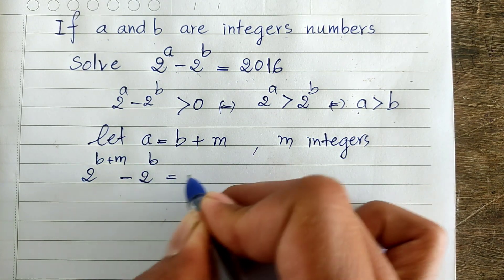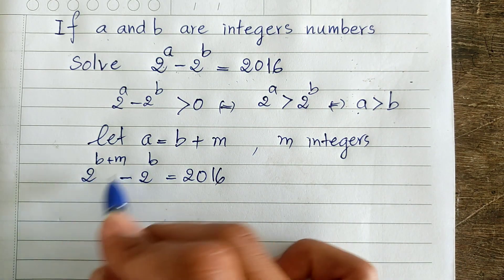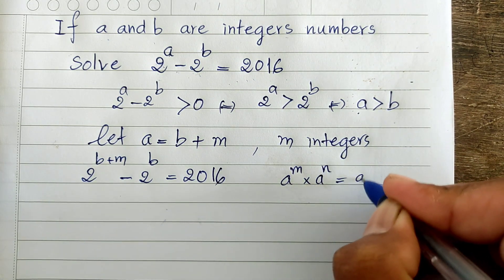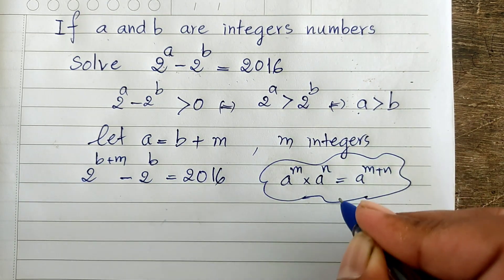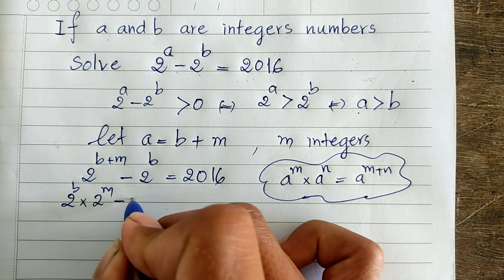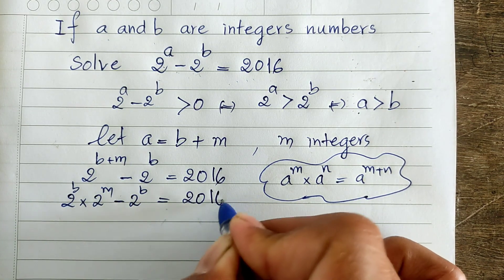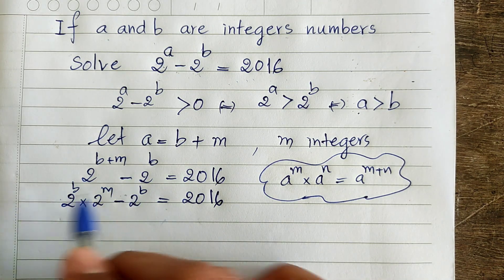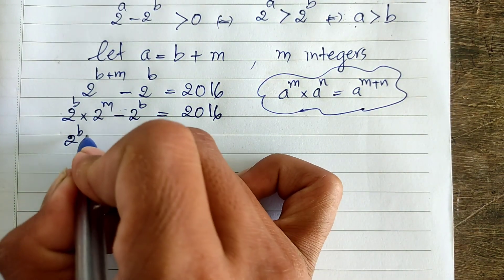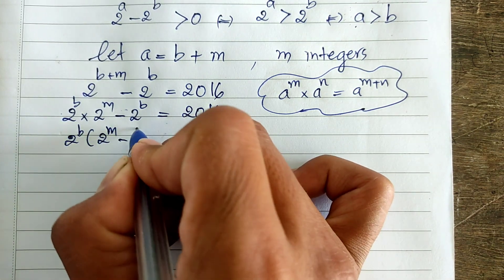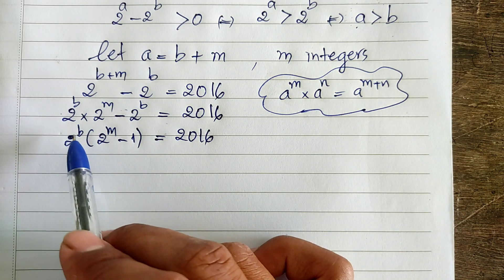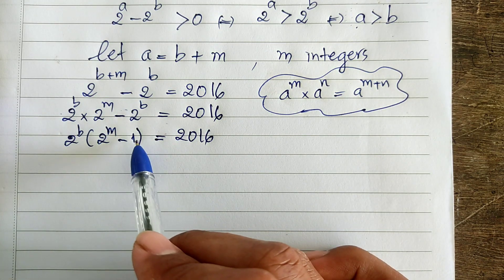Substituting, we get 2 power (b plus m) minus 2 power b equal to 2016. Using the exponent rule that a power m times a power n equals a power (m plus n), this becomes 2 power b times 2 power m minus 2 power b equals 2016. Factoring out 2 power b, we get 2 power b times (2 power m minus 1) equals 2016.